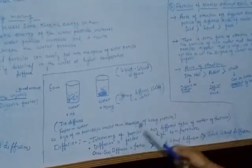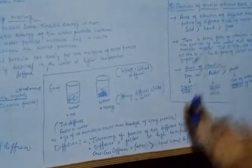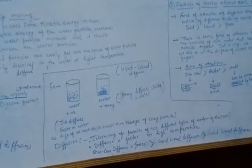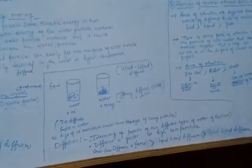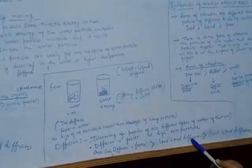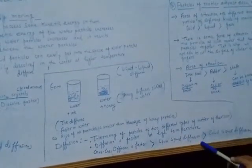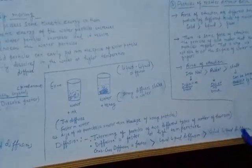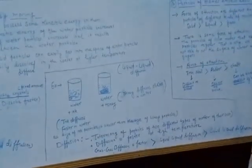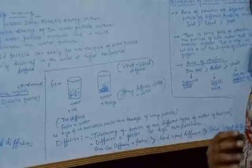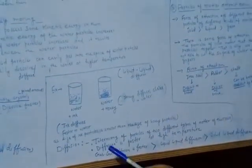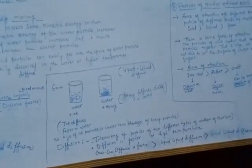Diffusion is faster at higher temperature — when you raise the temperature, diffusion increases. Also, gas-gas diffusion is fastest compared to liquid-liquid diffusion. For example, when you spray perfume, you can smell it immediately over a long distance, showing that gas-gas diffusion is the fastest.